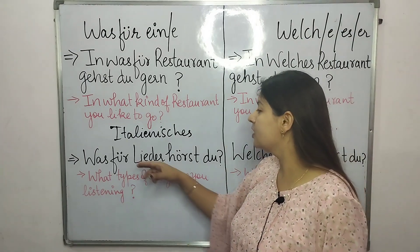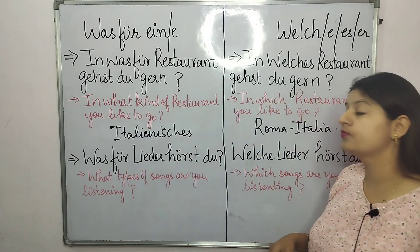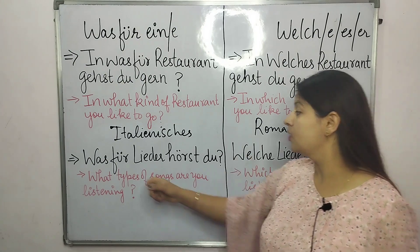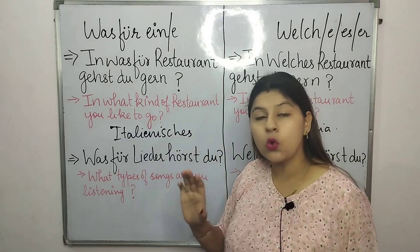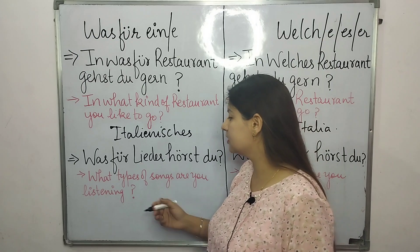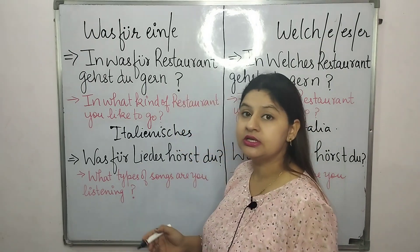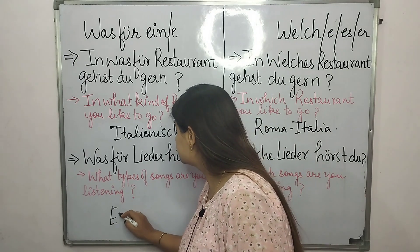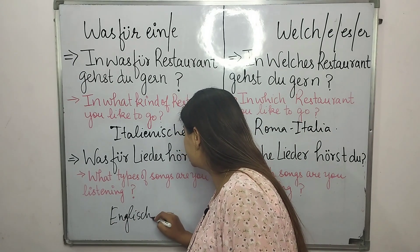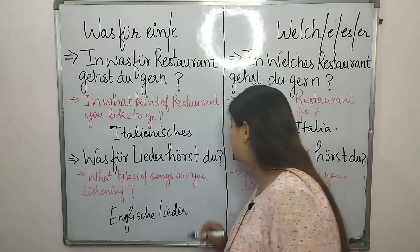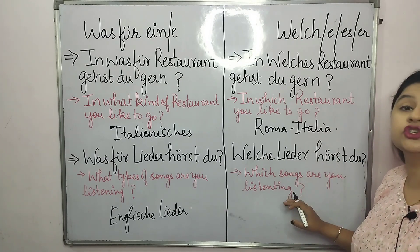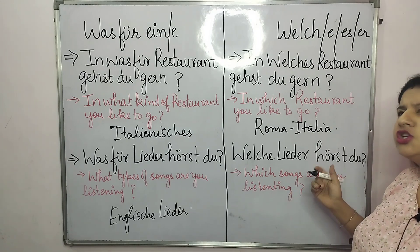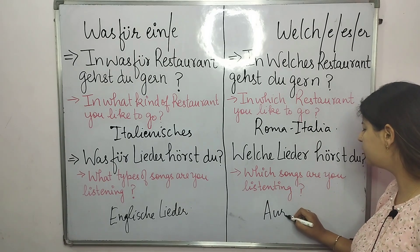Example two: 'Was für ein Lied hörst du?' — what type of song are you listening to? Again, no exact information needed, so I can answer: 'Ich höre englische Lieder' — I listen to English songs. But 'Welches Lied hörst du?' — which song are you listening to? — now I have to mention a specific name, for example 'Suicide Aurora Runway.'